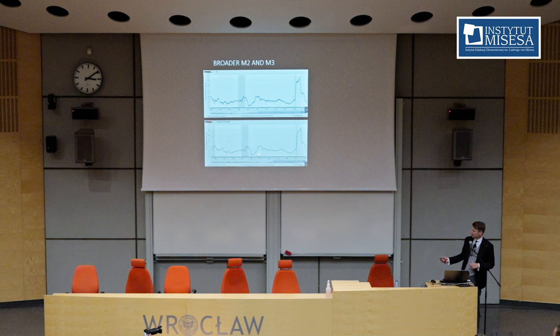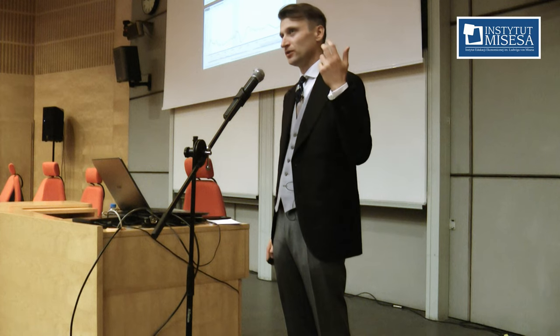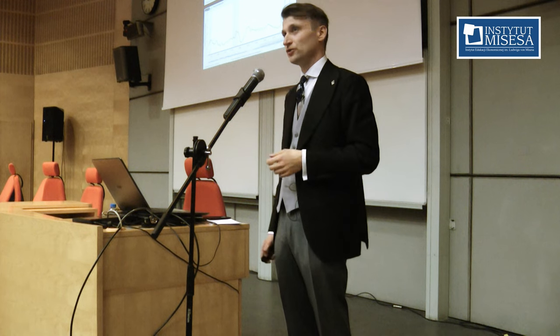When you look at broader measures of money supply — for example, M2 and M3 in the United States — you see the clear difference between 2008 and what was going on a year or two years ago. In 2008, you can barely see increases in M2 and M3 compared to, for example, what was going on in the early 2000s after 2001–2002 with the so-called Greenspan bubble. But when you compare it to what was going on recently, there is a clear spike — significant increases in the quantity of money understood in a broader way than just the monetary base.